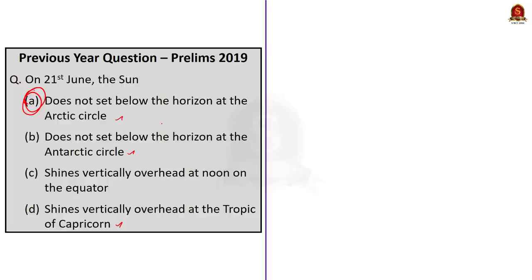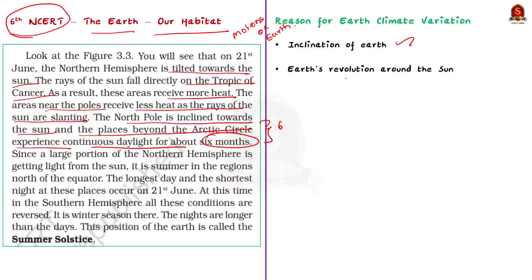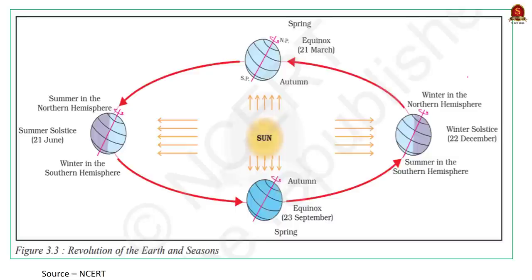So the correct option is option A. June 21st is the summer solstice. Climate variation on Earth is caused due to Earth's inclination — the Earth's axis of rotation is tilted 66.5 degrees with respect to its orbital plane around the sun — and Earth's revolution around the sun. On June 21st, in the areas above the Arctic Circle, the sun does not go below the horizon, while in the southern hemisphere, in areas below the Antarctic Circle, there is complete darkness. Similarly, on December 22nd, when sunlight falls directly on the Tropic of Capricorn, the area above the Arctic Circle receives no sunlight, while the area below the Antarctic Circle receives sunlight all throughout the day. December 22nd is also called winter solstice.